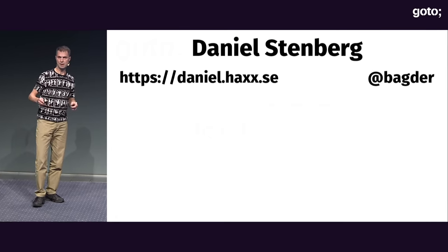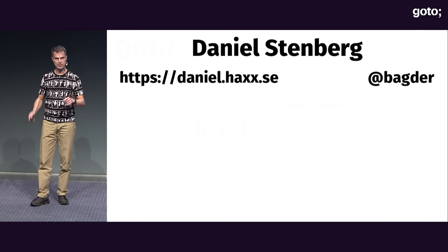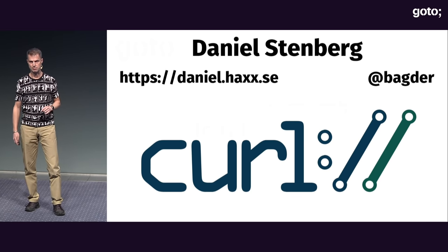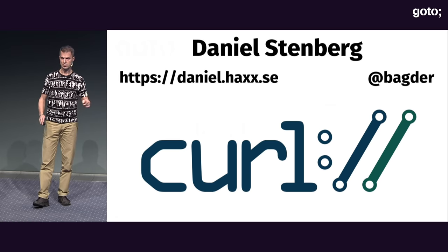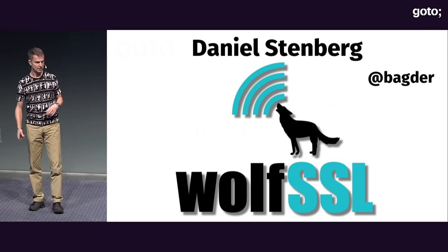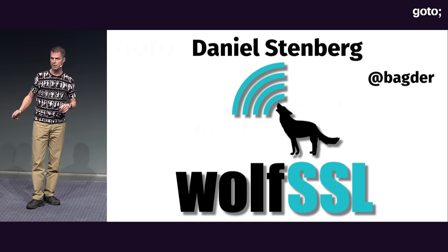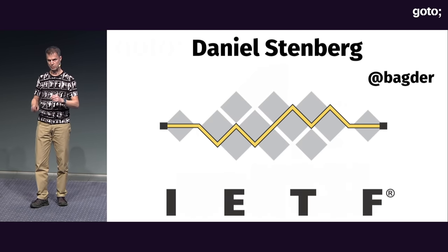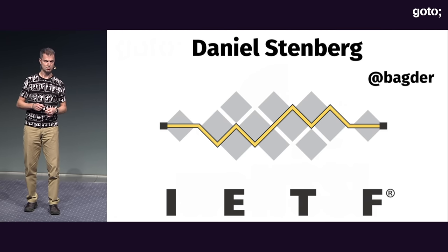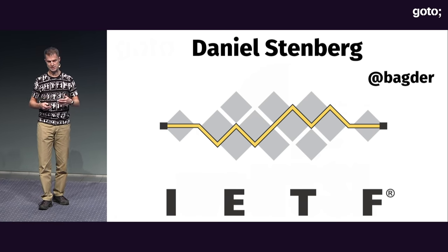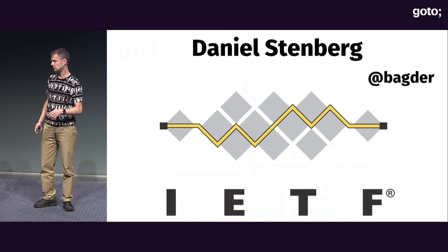I'm Daniel Stenberg. I have this funny accent because I'm from Sweden. I started playing with HTTP basically 23 years ago when I started a little fun project that I'm working with today full-time. I work for the company WolfSSL. We sell curl-related services and support for everyone. I started working in the IETF basically 10-12 years ago, IETF being the organization behind HTTP 3 — basically the organization working on everything I'm going to talk about today.